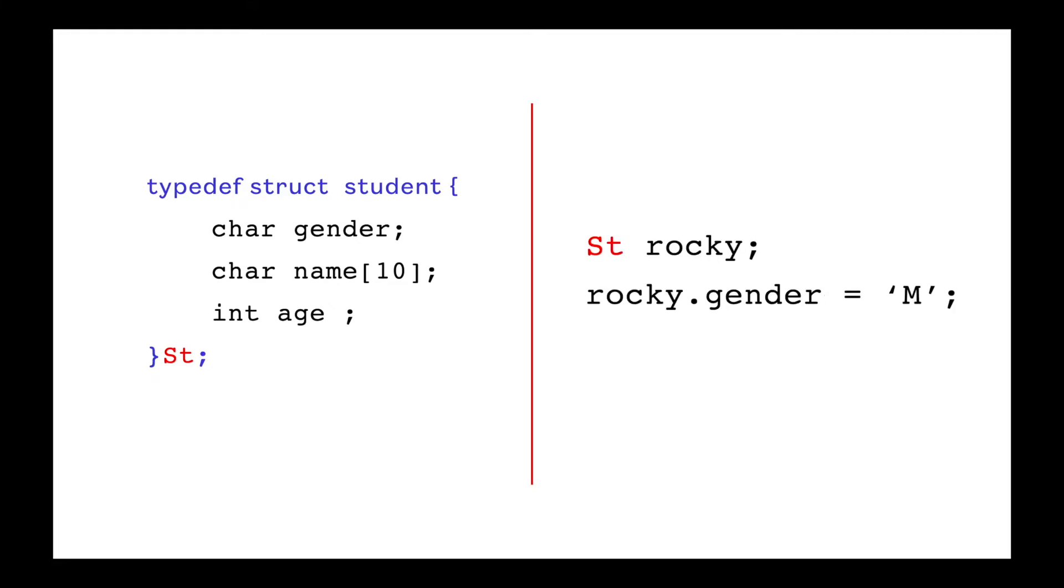We can access its member using dot operator. Here I have updated gender using dot operator with the value m. You can initialize as well at the time of declaration.